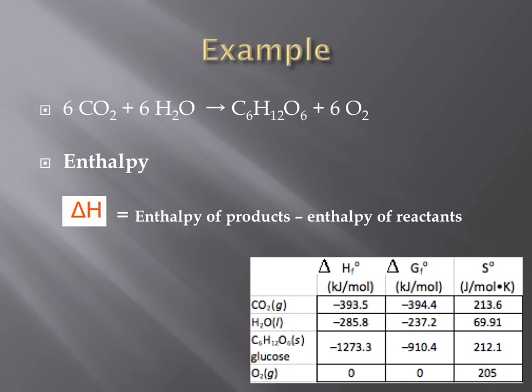Second, you'll need to calculate delta H, or enthalpy. The way that we can calculate this change is by taking the enthalpy of the products, those components on the right side of your chemical reaction, and subtracting those from the enthalpy of your reactants, what goes into your chemical reaction. These data would be obtained using a table such as the one found on the bottom right of this page.